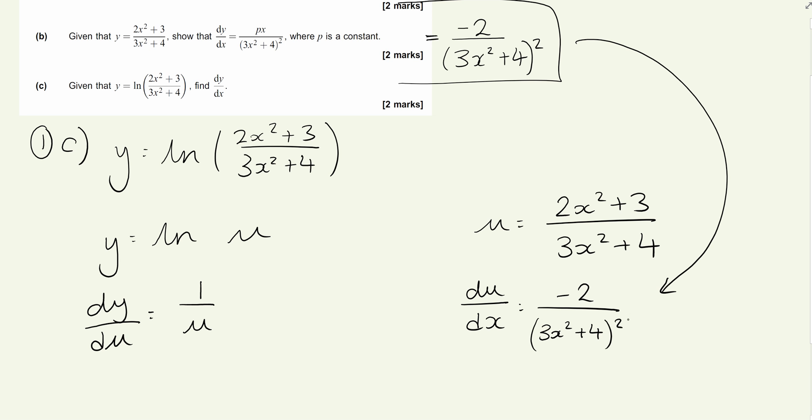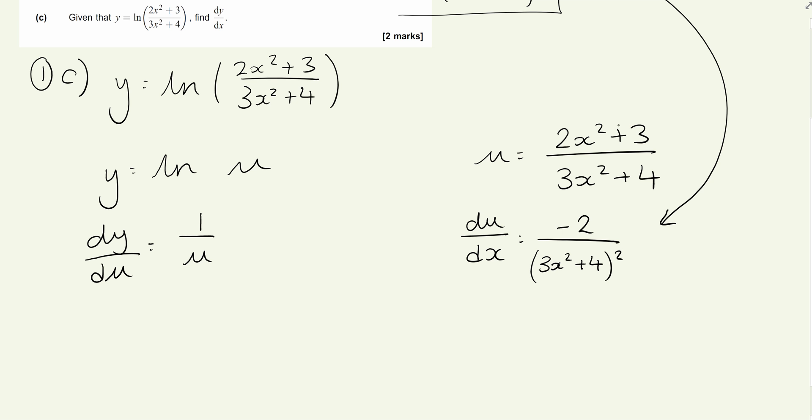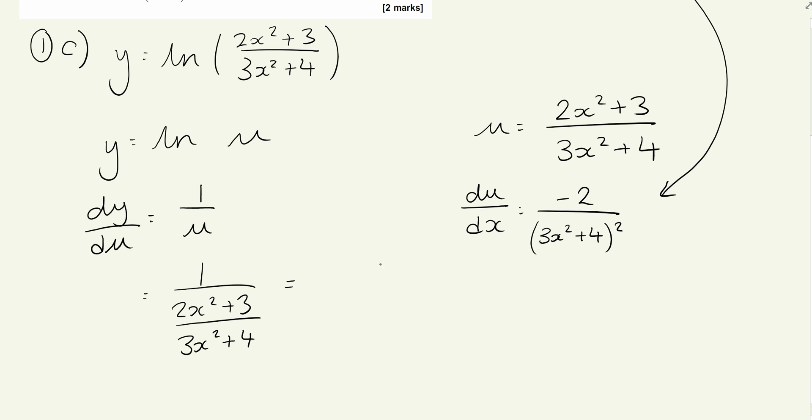Obviously if you didn't spot that, you've got an awful lot more repeated work ahead of you. How does the chain rule work? We multiply these two things together. What is u? u is this bottom one. We're going to write this as 1 over (2x² + 3)/(3x² + 4), which is the same as (3x² + 4)/(2x² + 3). If you're not happy with that step, you need to do more research with division of fractions.